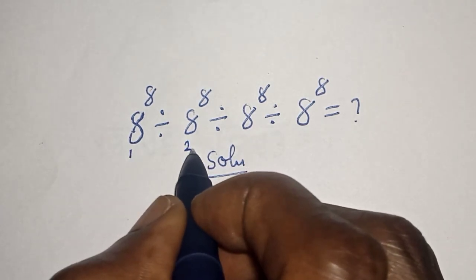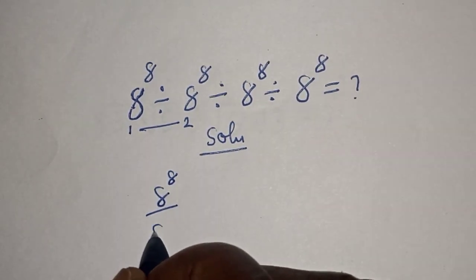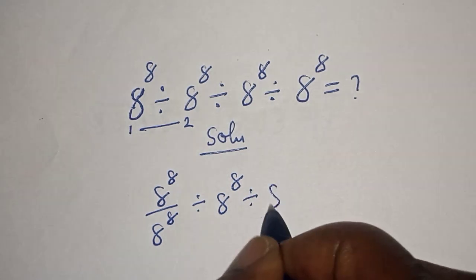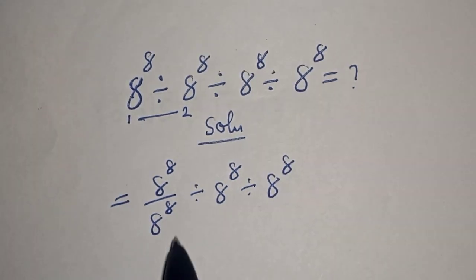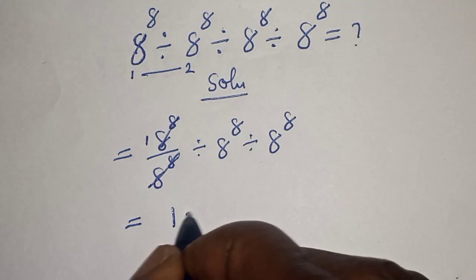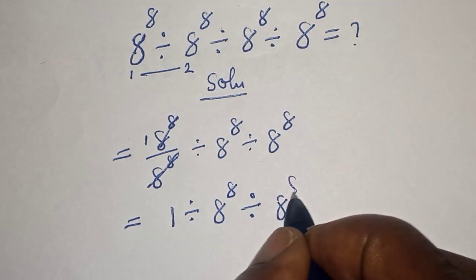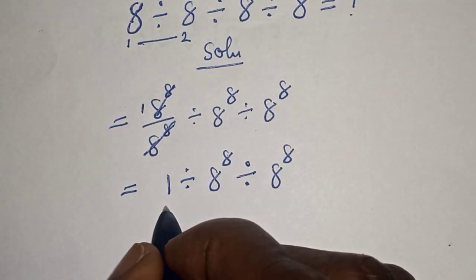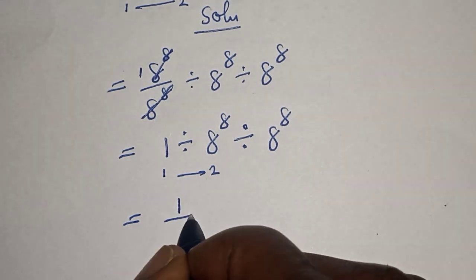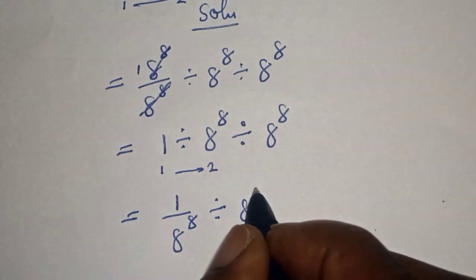8 to the power of 8 divided by 8 to the power of 8 divided by 8 to the power of 8 divided by 8 to the power of 8 — this one will cancel this one, equal to one divided by 8 to the power of 8 divided by 8 to the power of 8. Let's work with these two also: one divided by 8 to the power of 8 divided by 8 to the power of 8.